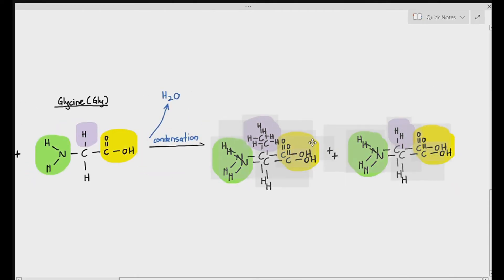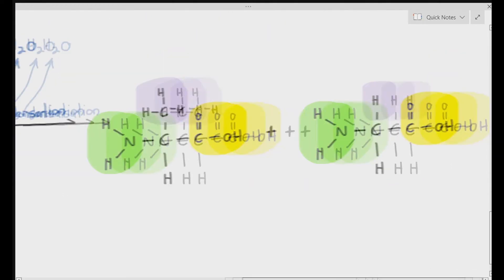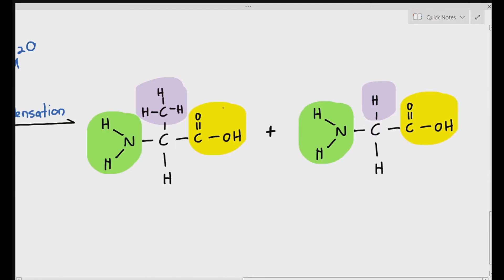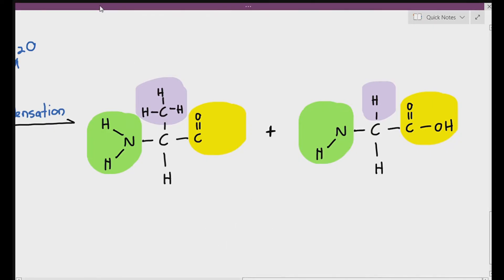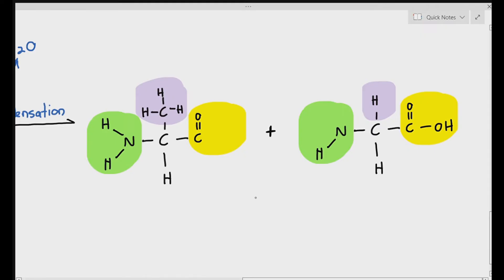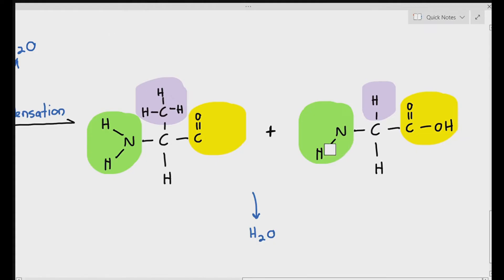To zoom in — as you can see, when I've zoomed in on the alanine, an OH group comes out from the carboxylic acid group. And a hydrogen comes out from the amine group of the other amino acid. You may want to replay this a bit slowly. When the OH group and H group come out from those two amino acids, they become water — that's where the water comes from.